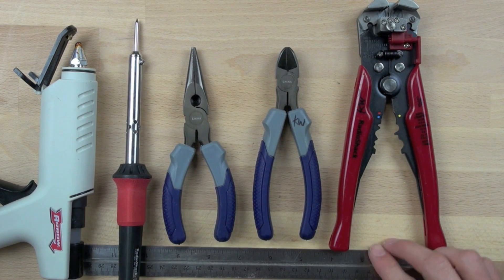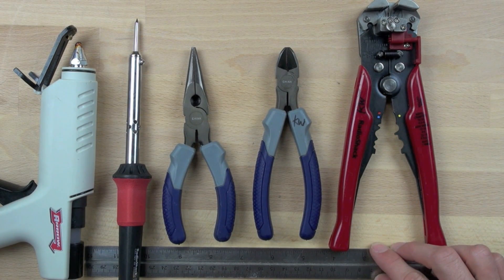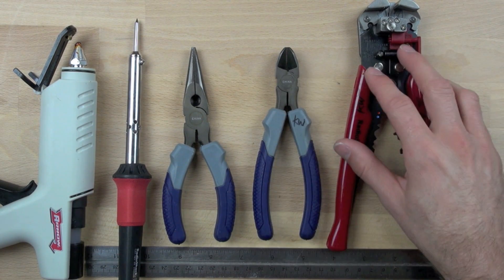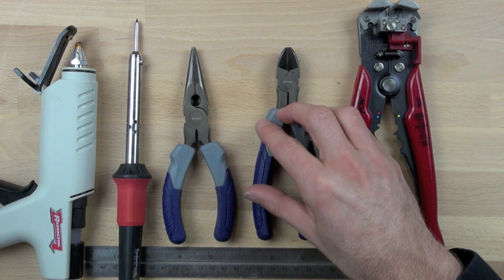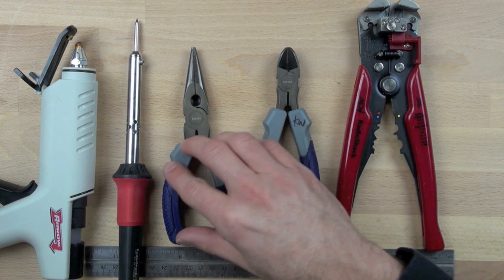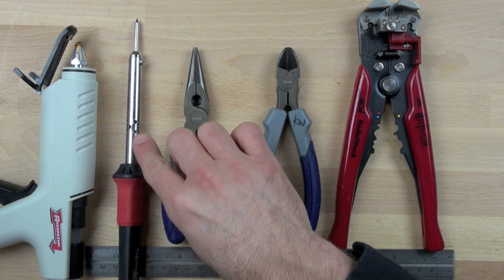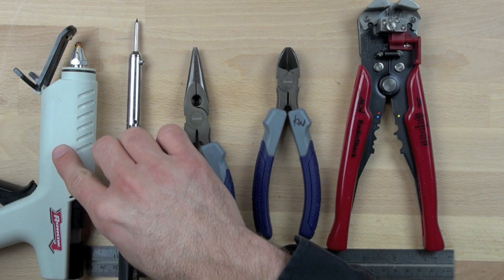The tools that we're going to need are a wire stripper, a wire cutter which is sort of a nipper pliers, a needle nose pliers, a soldering iron, and a hot glue gun.